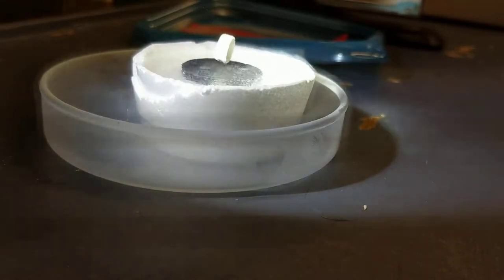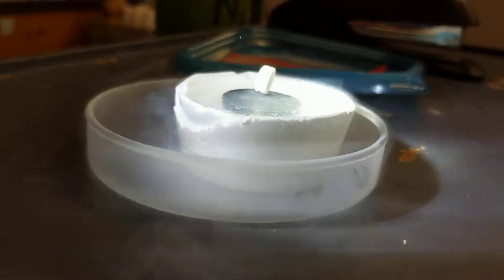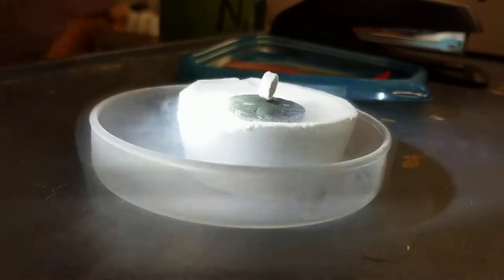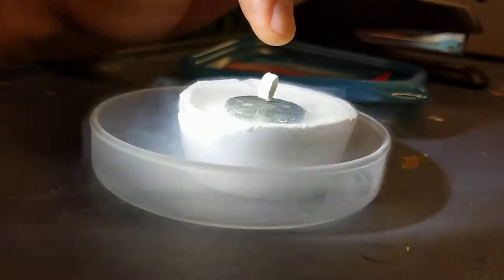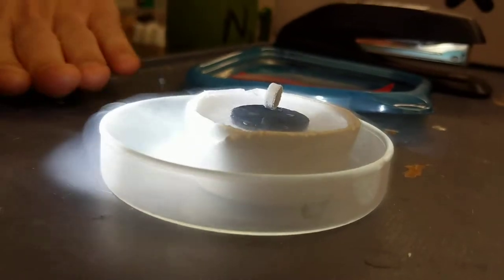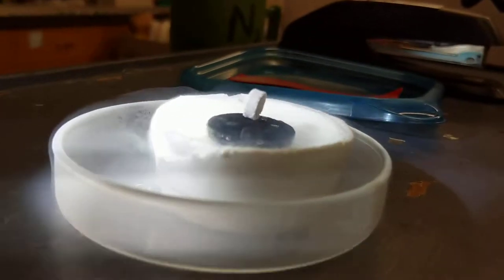When it gets cold enough, the superconductor has a property that it will not allow a magnetic field to pass through it. And so this is a really strong neodymium magnet, so it's like the magnetic field around the magnet is trying to have the magnet rest, but the black superconductor is repelling it.